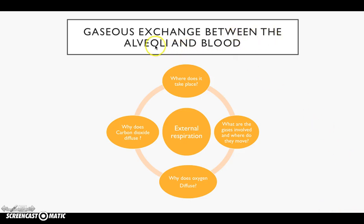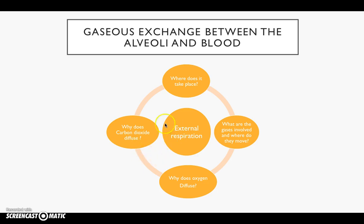Gaseous exchange between the alveoli and the blood — within the lungs only, because the alveoli are only in the lungs — this is known as external respiration. The key questions are: where does it take place — in the alveoli or at the muscles? What are the gases involved and where do they move? There are two key gases in PE: oxygen and carbon dioxide. Where does oxygen diffuse? Why does carbon dioxide diffuse from the bloodstream into the alveoli, or from the muscle into the bloodstream? If you can answer these questions at the end of the screencast, we're flying.